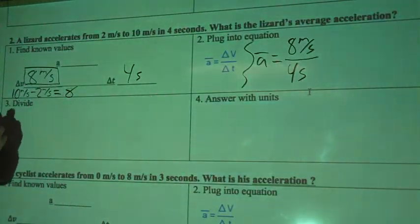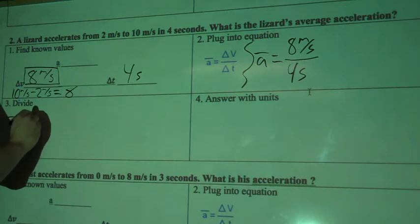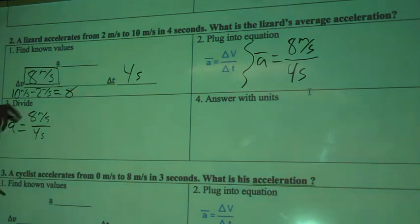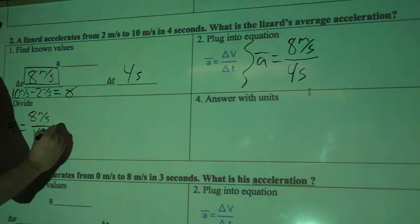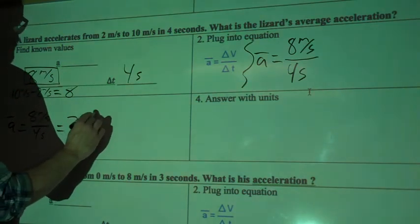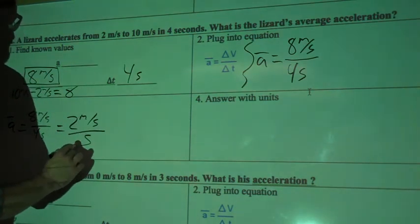So let's bring it down here to divide. This is going to be a really easy problem. So average acceleration equals 8 meters per second divided by 4 seconds. We can do this one in our head, I think. So 4 goes into 8 two times, right? So what I'm going to get is 2 meters per second divided by seconds.